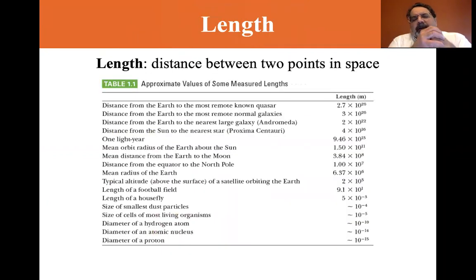The first unit that we look at is length, and it's the distance between two points in space. The standard that we use is the meter. The meter is about 39 inches. You'll see plenty of meter sticks in the lab whenever you conduct an experiment. But sometimes a meter stick is too large. We'll use a micrometer. We'll use a vernier caliper to measure smaller lengths. So given that we're going to use the meter as a standard, here are some standard lengths in meters. The distance from earth to the most remote known quasar is 2.7 times 10 to the 26 meters. One light year is 9.46 times 10 to the 15th meters. The mean radius of the earth is 6.37 times 10 to the 6 meters.